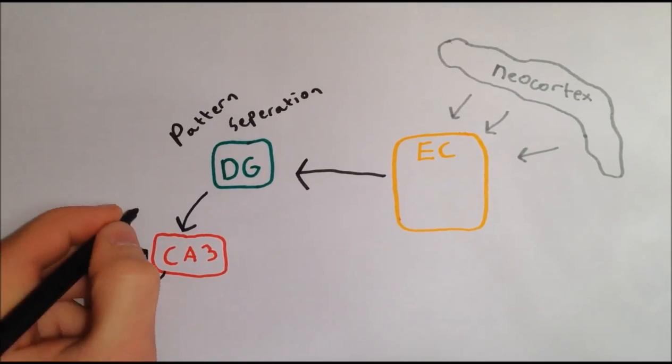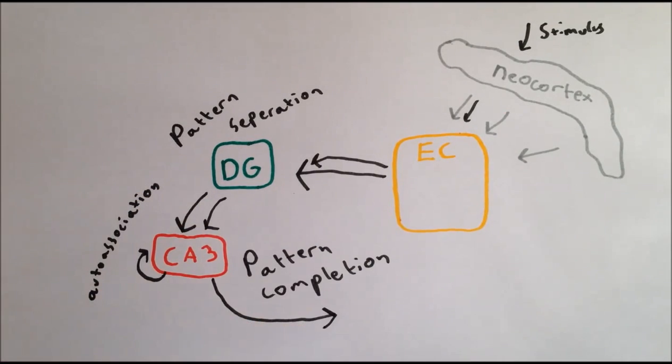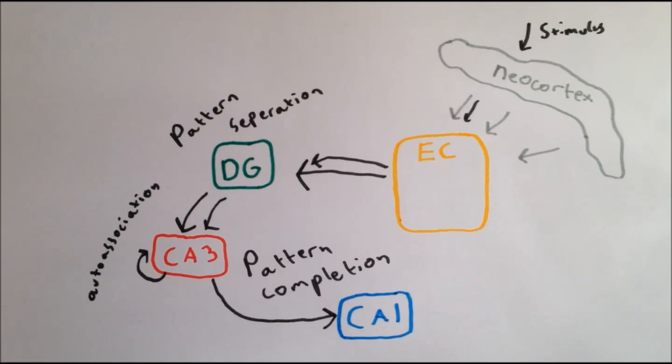Then, when a feature of the original stimulus is present, it activates a subpopulation of the original neurons activated in CA3, and the recurrent connections allow reactivation of the remaining neurons making up the pattern.